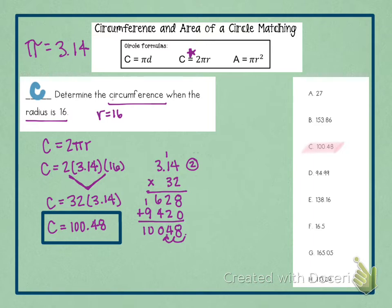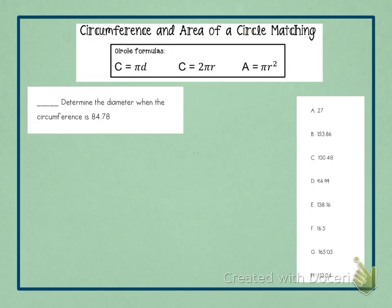So then we are going to move on and go to number two. So number two says determine the diameter. So this is a different kind of problem. Determine diameter when the circumference equals 84.78. So we are talking about circumference and we are talking about diameter. So here is circumference, here is diameter. So we are going to pick this formula.